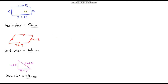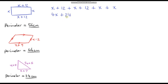Now it's over to you. For each question, form an expression for the perimeter of each shape, then using the given perimeter, set up an equation and solve it to find the missing values. For the first one, we've got x plus 12 plus x plus 12 plus x plus x. Simplified, x plus x plus x plus x is 4x, and 12 plus 12 is 24. So the expression is 4x plus 24. The perimeter is 56, so we set that equal to 56. Taking away 24 from both sides gives 4x equals 32. Dividing both sides by 4 gives x equals 8.